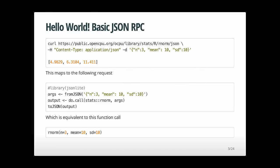I hope to convince you today that OpenCPU really is something very different and it fits a very different purpose. So let's start with a very simple example. Here is a simple curl line. If you're familiar with curl, it's a simple HTTP client. We're calling the rnorm function from the stats package in R, which you can copy-paste in your console to prove that it actually works.